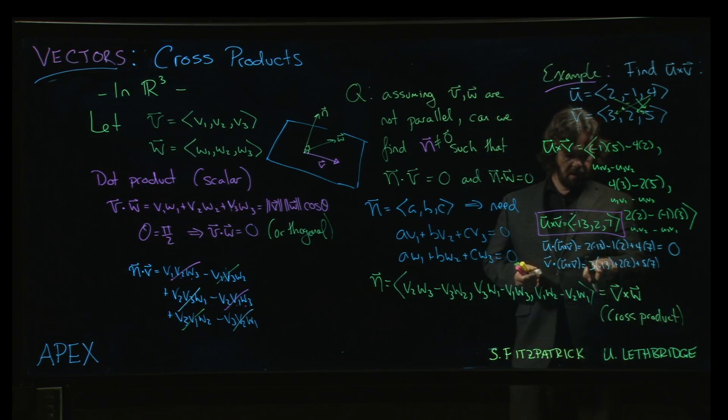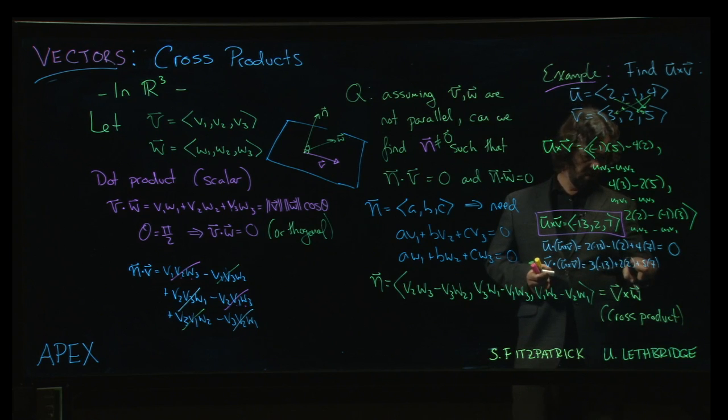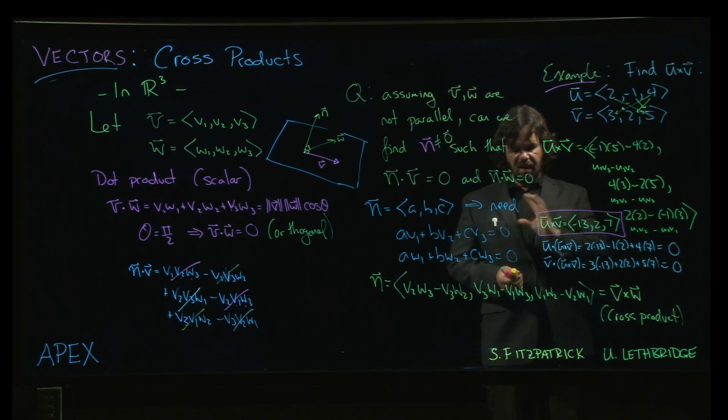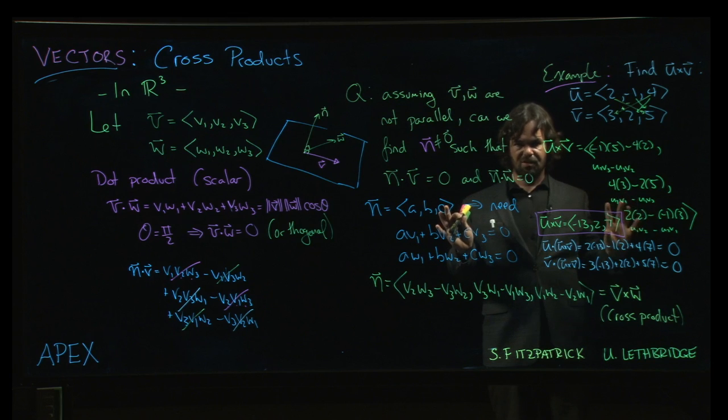So let's see, minus 39 plus 4 plus 35. So 4 plus 35 is plus 39 minus 39. Yep. Checks out. We get 0 for both of those, right? And so if both of those dot products come out to be 0, you can be, I would say 100% confident that you've done the job correctly.